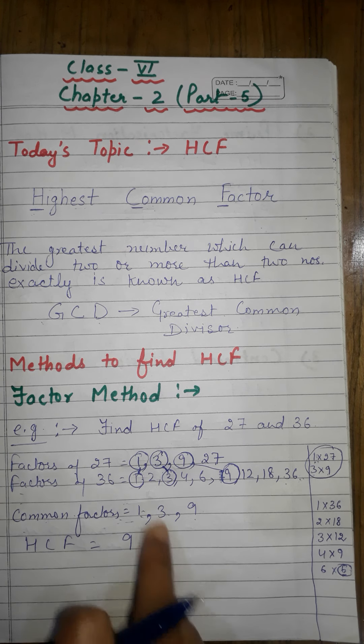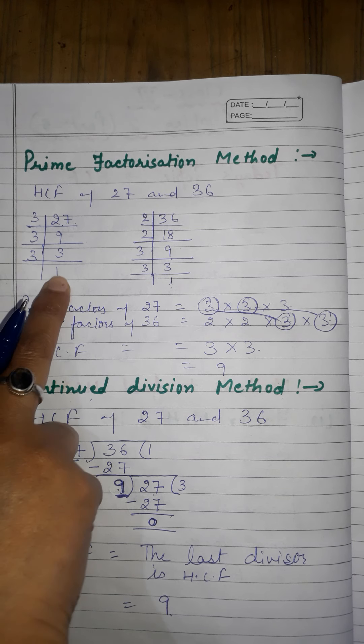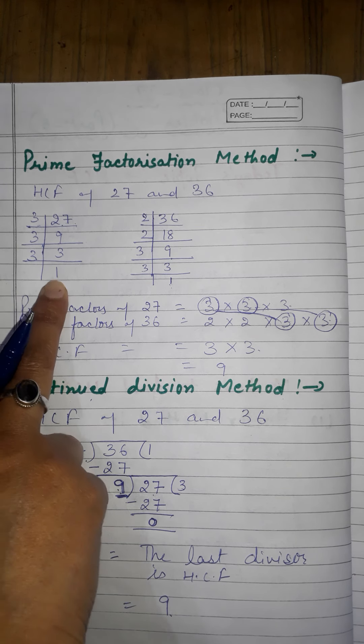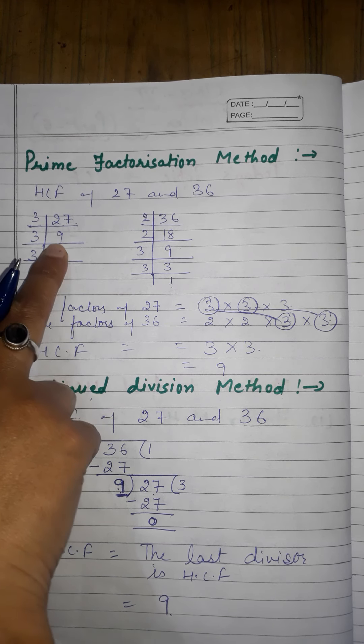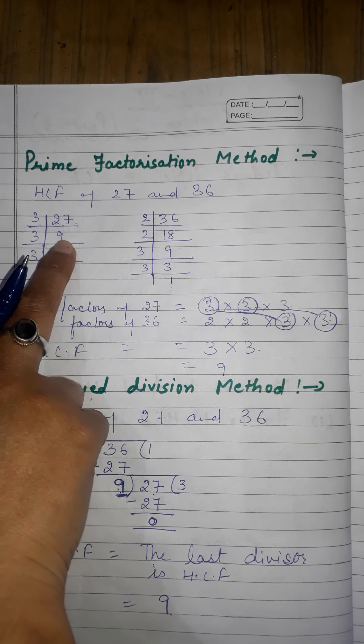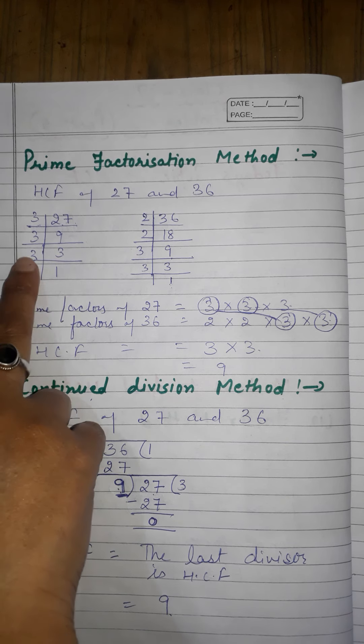For prime factorization, we use division by prime numbers and this process continues until the last quotient becomes 1. For 27, we check with the first prime number 2 — 27 is not divisible by 2. Next prime is 3: 3 × 9 = 27. Again divide by 3: 3 × 3 = 9. Again divide by 3: 3 × 1 = 3. So the prime factors of 27 are 3 × 3 × 3.